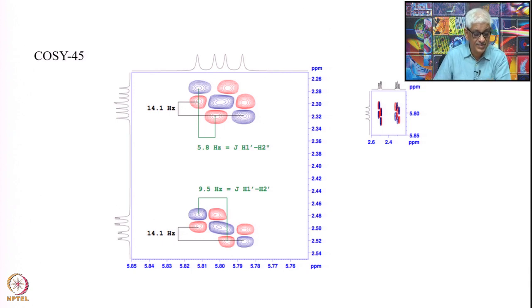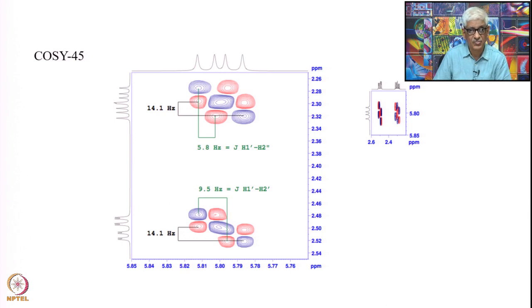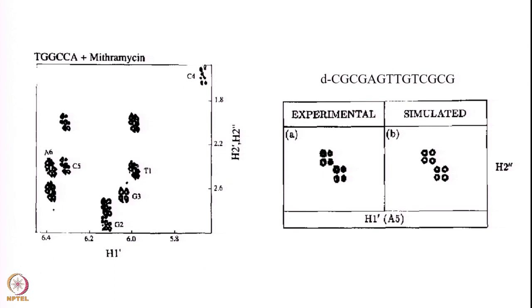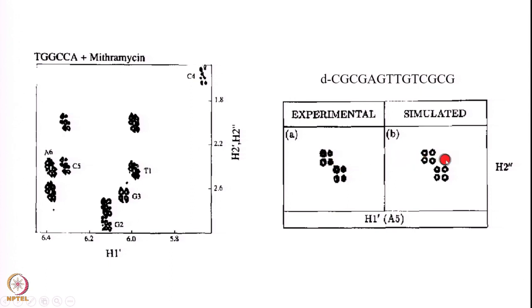This is a very beautiful spectrum illustrating the fine structures. Now this is another experimental spectrum with the simulated spectrum shown for one particular cross peak — the A-phi nucleotide. The 1'-2'' coupling of that is shown here: this is the experimental spectrum and this is the simulated spectrum, and the overlay is perfectly overlapping. When you do that you can get the coupling constants very clearly.